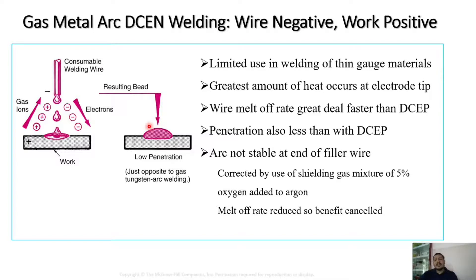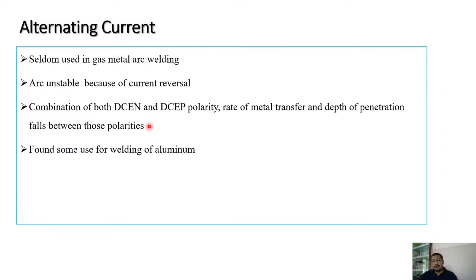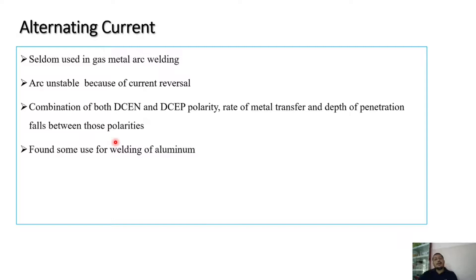Inverter-type power sources can provide both DC and AC. However, AC is normally not recommended for GMAW because the current reverses every half cycle, causing an unstable arc. AC does find some application in the welding of aluminum alloys, where the combination of DCEN and DCEP polarity provides a rate of metal transfer and depth of penetration that falls between the two DC polarities.